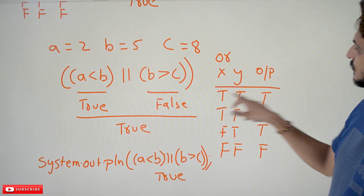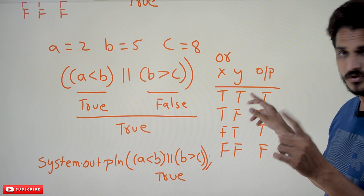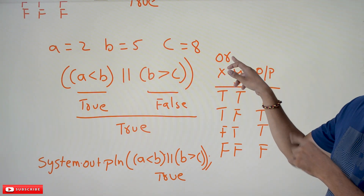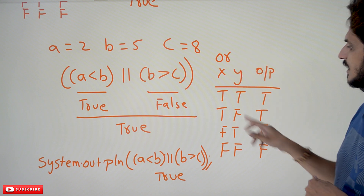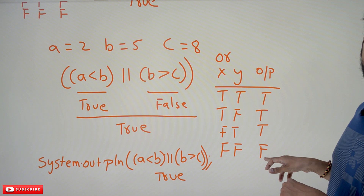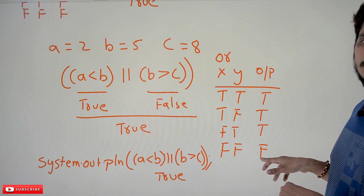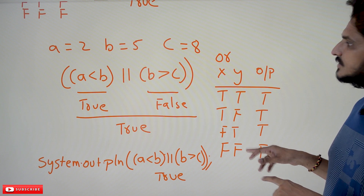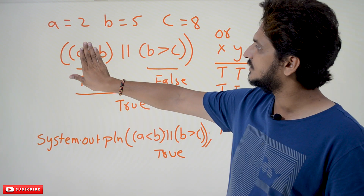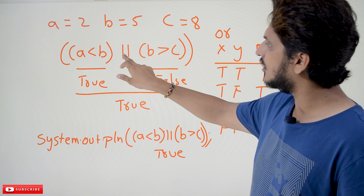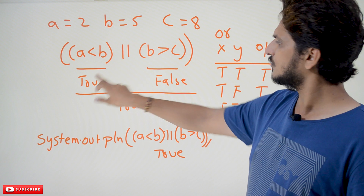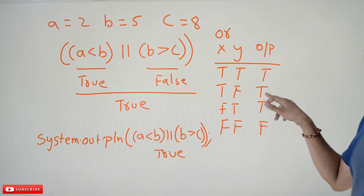The truth table of the OR operator: true OR true gives true; true OR false gives true; false OR true gives true; false OR false gives false. Any one condition being true makes the entire output true. In our example, the first condition is true and the second is false, so OR gives true. You can write the code as system.out.println(A < B || B > C) and it will display true.